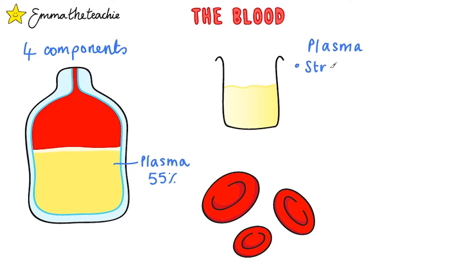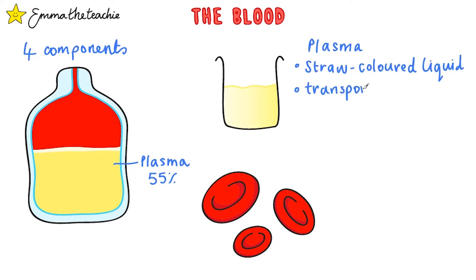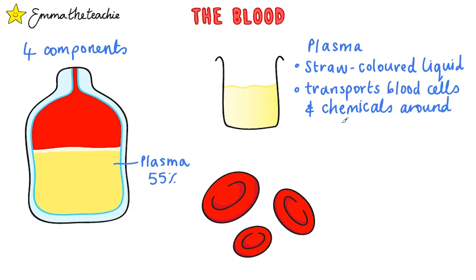It's made of plasma. Plasma is a pale, straw-yellow coloured liquid. Its function is to transport your blood cells around the body, along with some other chemicals such as carbon dioxide, urea, and proteins.